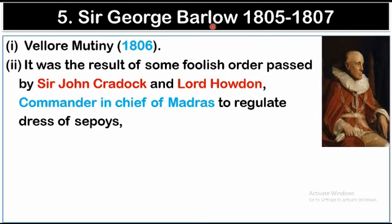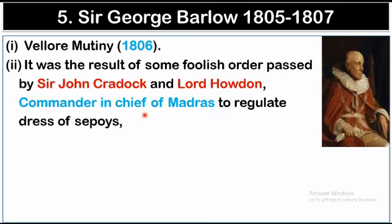The fifth Governor-General was Sir George Barlow, whose tenure was from 1805 to 1807. Under his tenure, the Vellore Mutiny occurred in 1806. The main reason for the Vellore Mutiny was interference in the customs and culture of Indian Sepoys. The Commander-in-Chief of Madras, Sir John Cradock and Lord Howden, passed regulations to regulate the dress of the Sepoys, which triggered the mutiny.